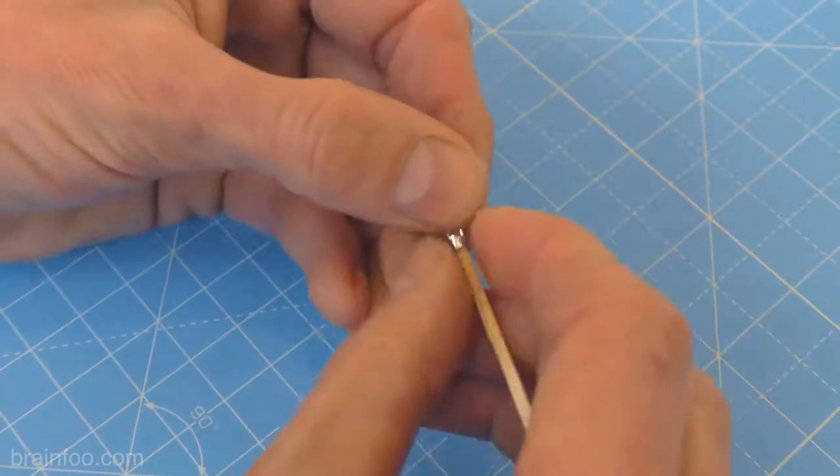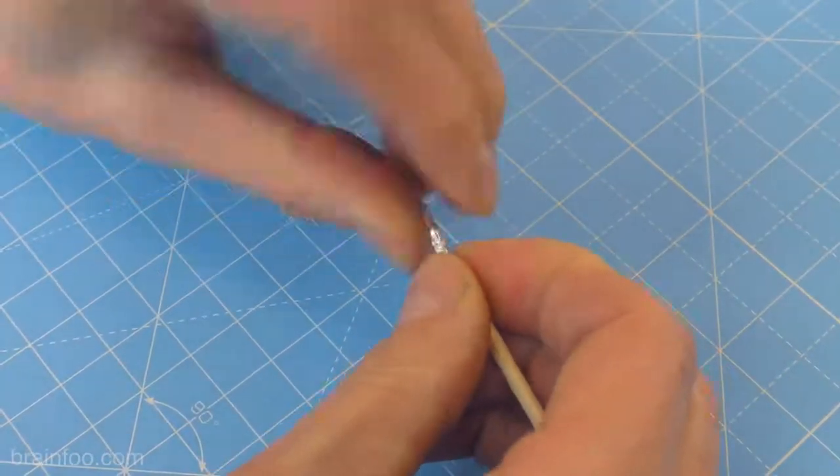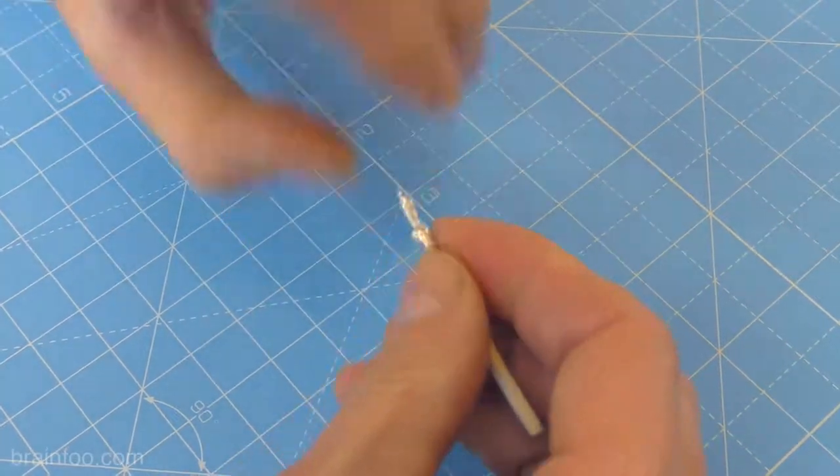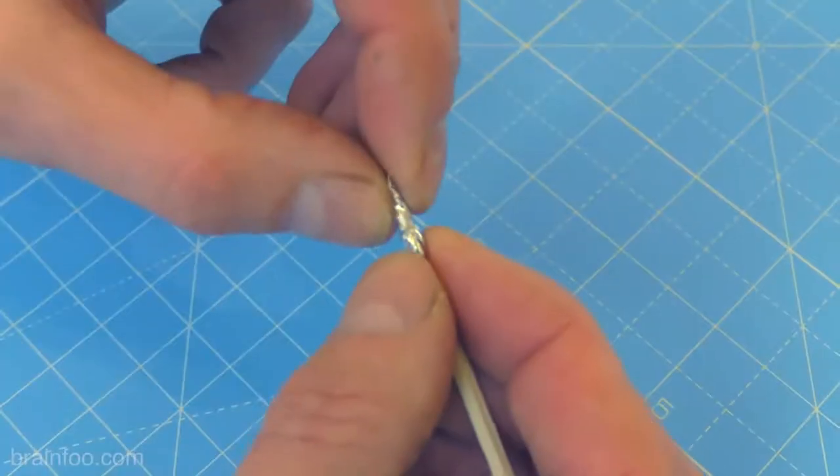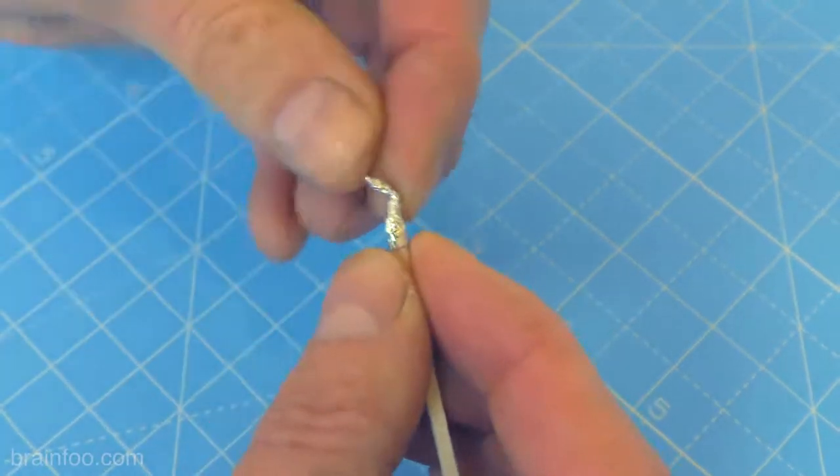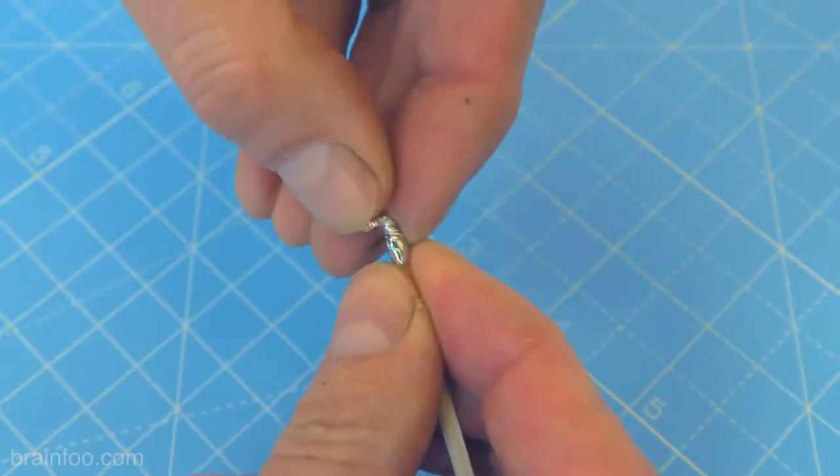With that done, twist the spare foil at the top in the same direction that you were rolling it. This seals off any gas that will want to escape on launch. To finish, simply fold the foil tip back down onto itself like this.